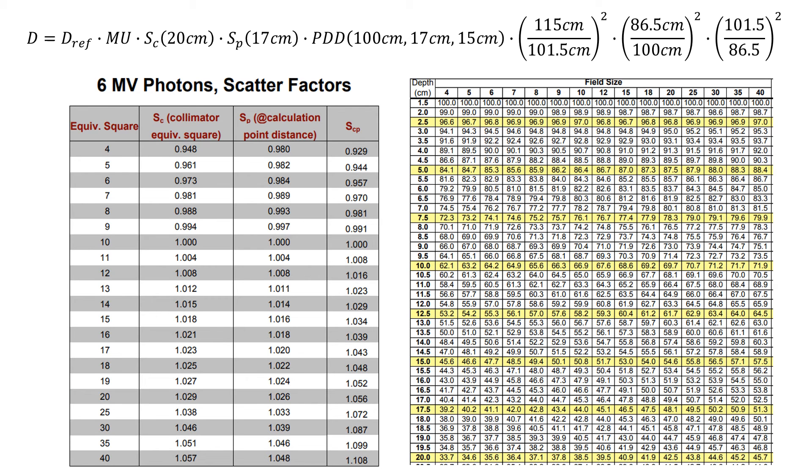And so we can just go ahead and look up our values here that we need. So for our scatter factors, we'll just find the collimator scatter factor for a 20 field size, the phantom scatter factor for a 17 field size, and then the PDD we will find for a field size of 17 and a depth of 15, and do a little bit of an interpolation there to get our values.